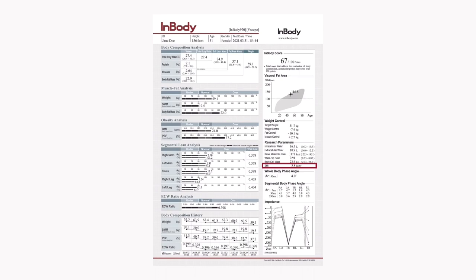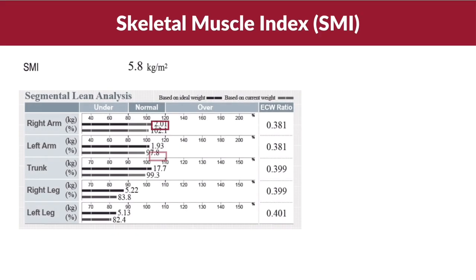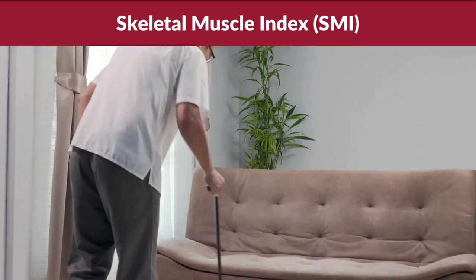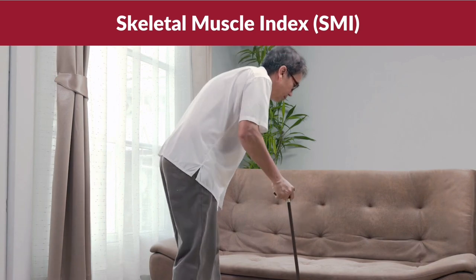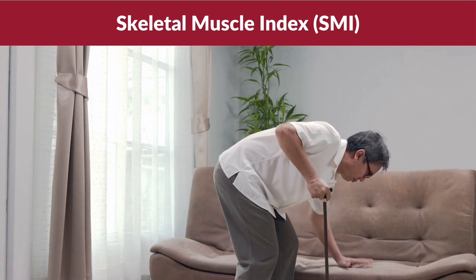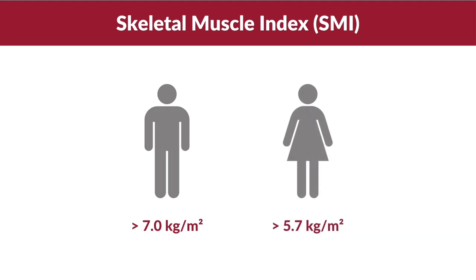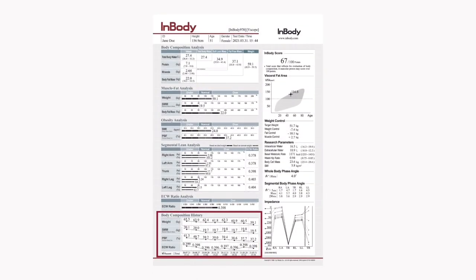Furthermore, we have SMI, the skeletal muscle index, which is a measurement used to assess the amount of skeletal muscle in relation to a person's height. It is very useful in screening sarcopenia, a condition of muscle loss due to aging. Ideally, the SMI value for Asians should be more than 7 kg per meter squared for men and more than 5.7 kg per meter squared for women. Any lesser than that will put you at a higher risk of developing sarcopenia.